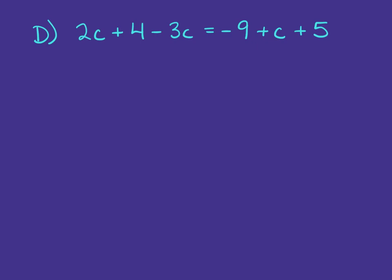Part D: 2C plus 4 minus 3C equals negative 9 plus C plus 5.